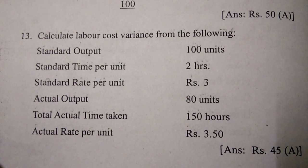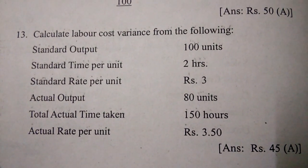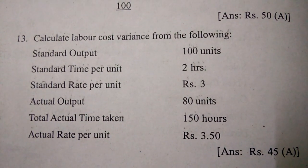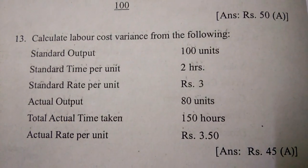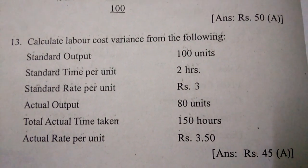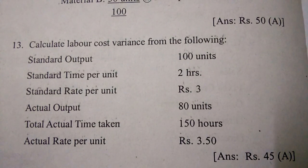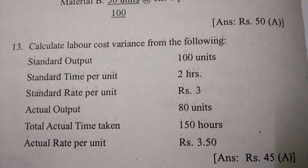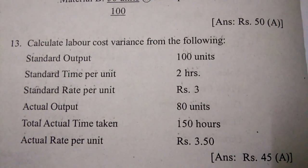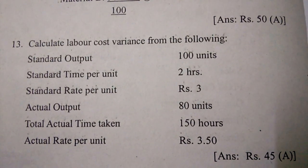Calculate labor cost variance from the following: standard output 100 units, standard time per unit 2 hours, standard rate per unit 3 rupees, actual output 80 units, total actual time taken 150 hours, actual rate per unit 3 rupees 50 paisa — answer is 45 rupees.